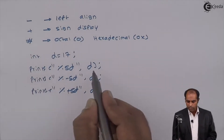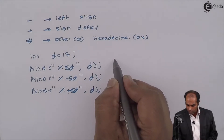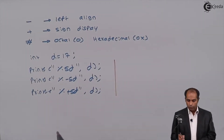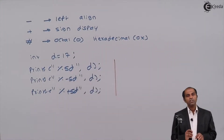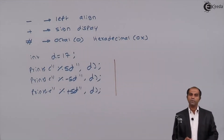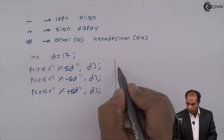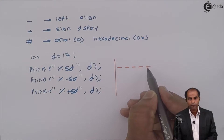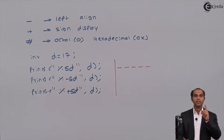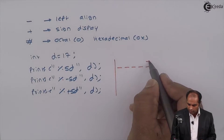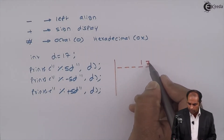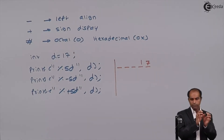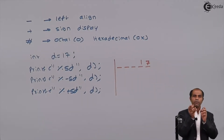Let's see how the output is generated. When I say percentage five d comma d — assuming this is the screen — the five d specifier says the value of d has to be displayed within five decimal digits. Count five spaces: one, two, three, four, five. Within this, the output is always right aligned, so seven appears at position four and one at position five, meaning spaces come first and then the number is displayed.